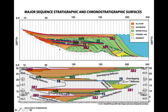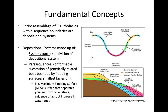We have sequence boundaries bounding the sequence — sequence boundary one and two. Between them, we have the transgressive systems tract and the maximum flooding surface. One sequence is made up of systems tracks, and within those we find the smallest facies unit in sequence stratigraphy: parasequences. These are related beds bounded by flooding surfaces, such as the maximum flooding surface.